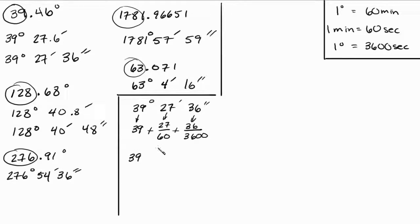So 39, so I'm going to type in my calculator, 39, 39 plus. Now, I'm going to put in parentheses, 27 divided by 60, and I'm going to close the parentheses. Then I'm going to hit plus again, and I'm going to open a new set of parentheses and type in 36 divided by 3600 and close the parentheses. And then I'm going to hit enter or equal.